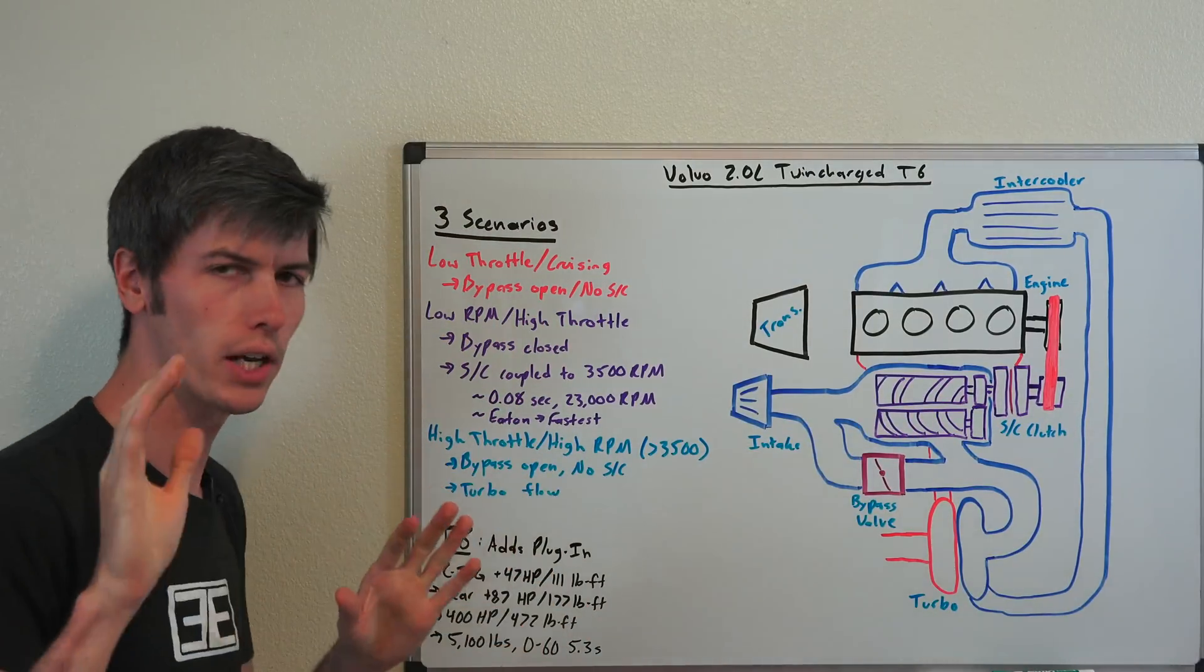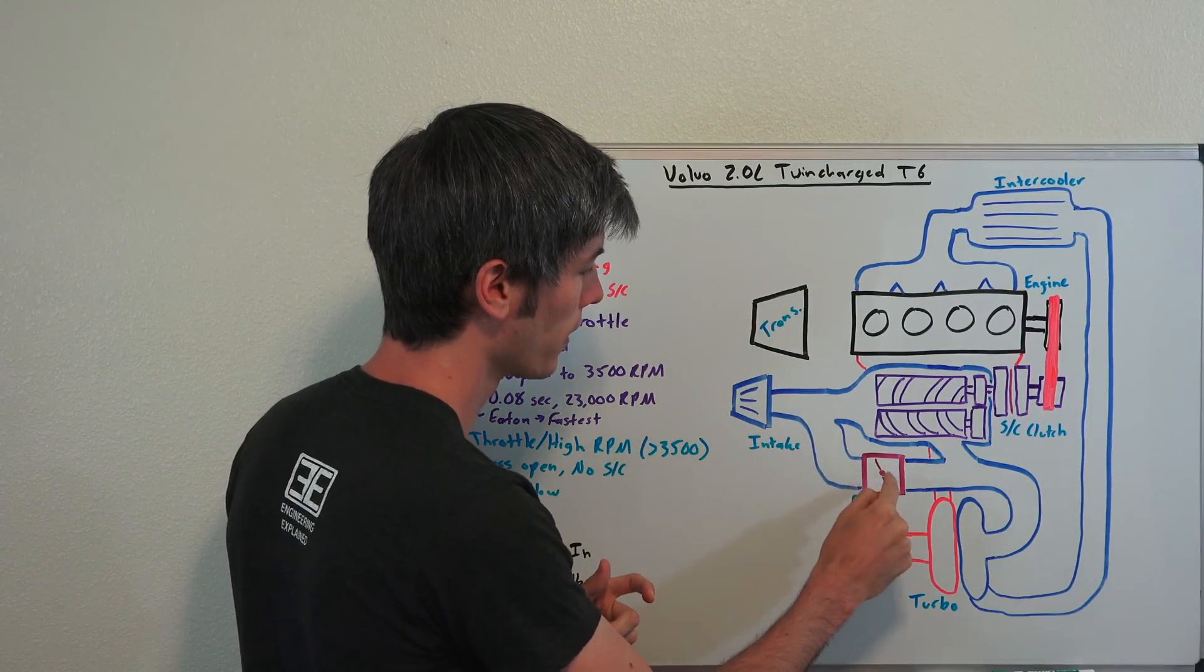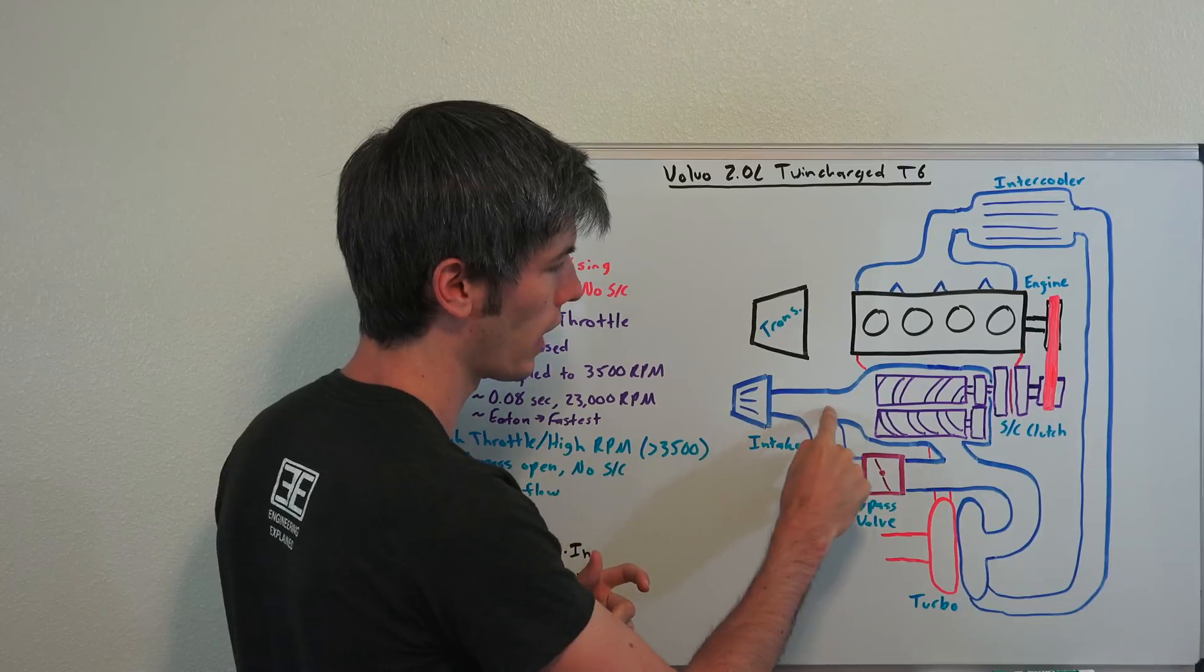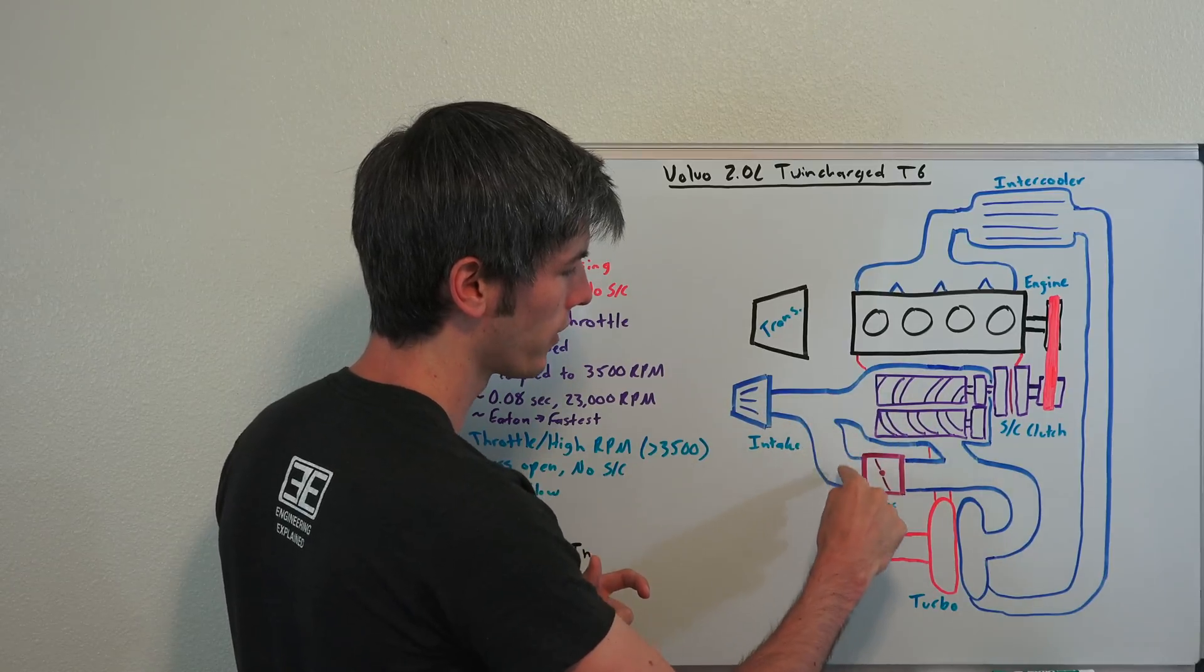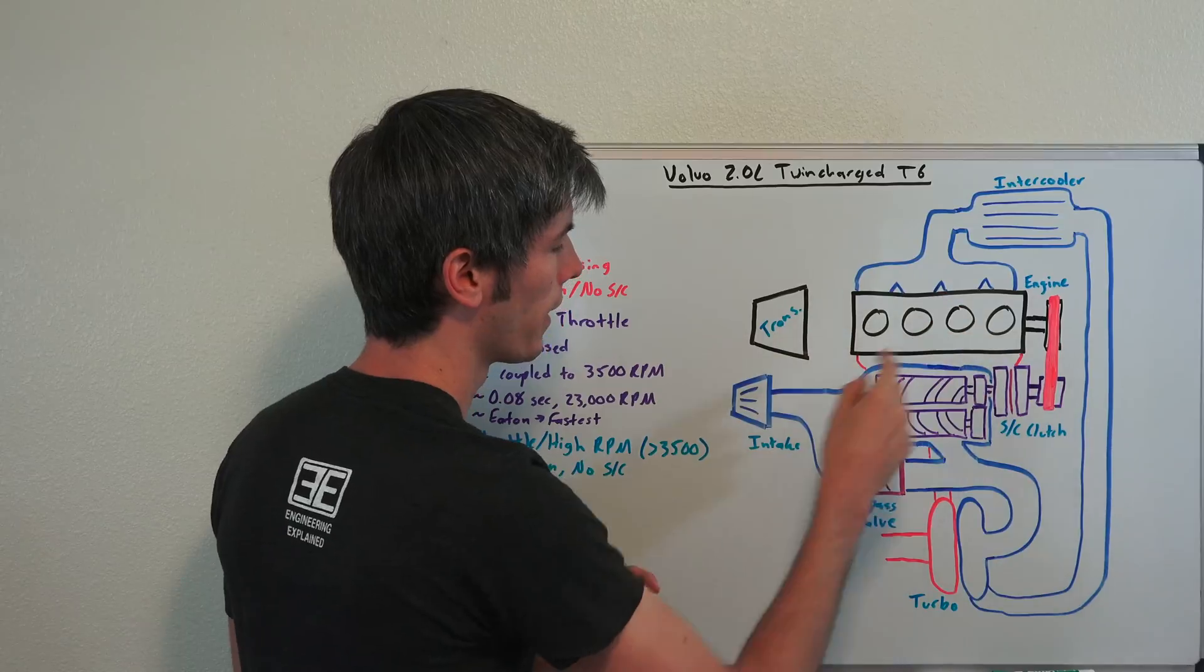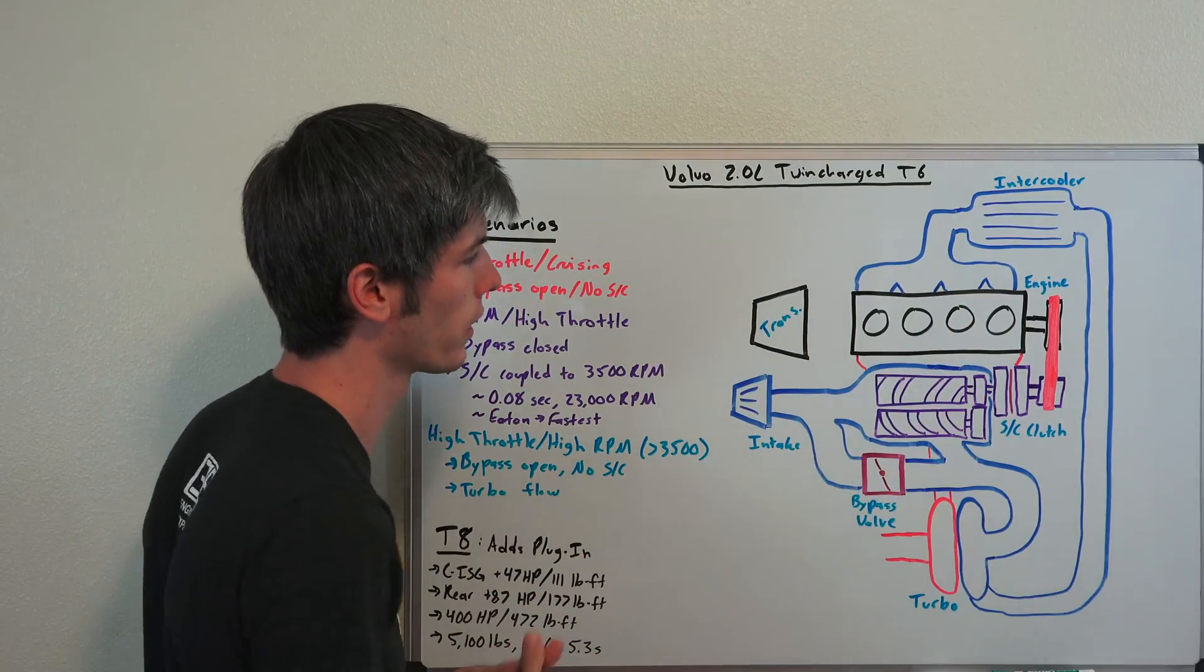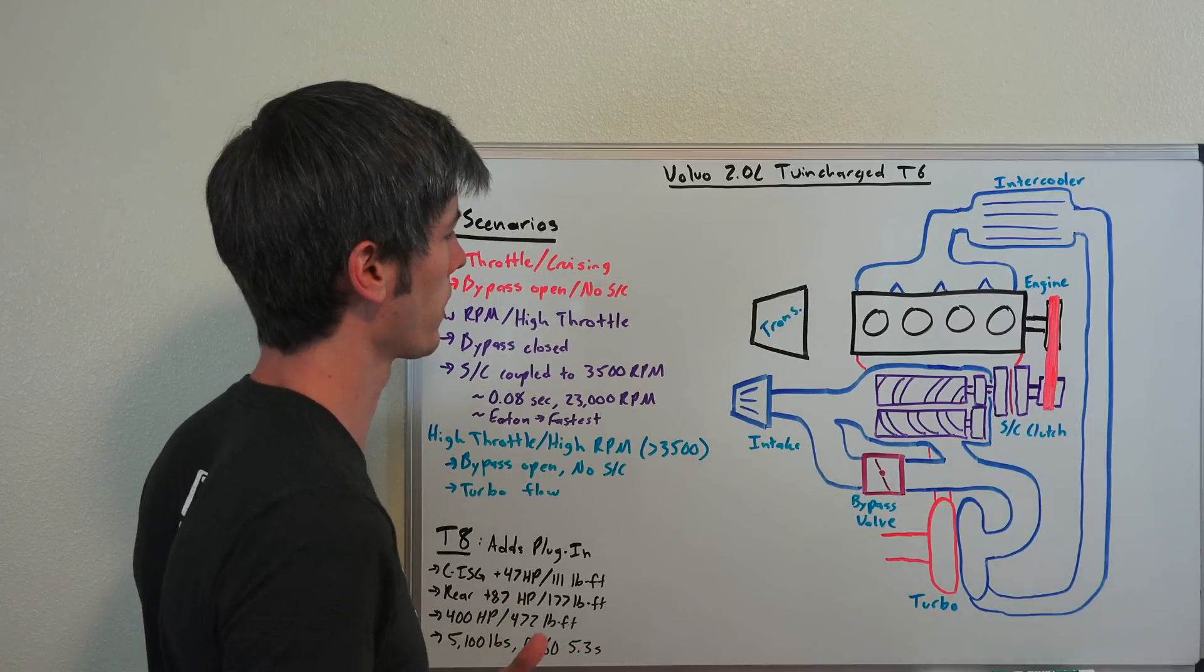So your airflow, when you're just cruising along, not asking for a whole lot of power, it's going to come in your intake. This bypass valve is going to be open, so it's not going to flow through the supercharger. Instead, it'll flow through this bypass valve, into the turbocharger, through the intercooler, and then into the engine. And so that's going to be more efficient, you're not requiring the supercharger to be used to create that additional power.